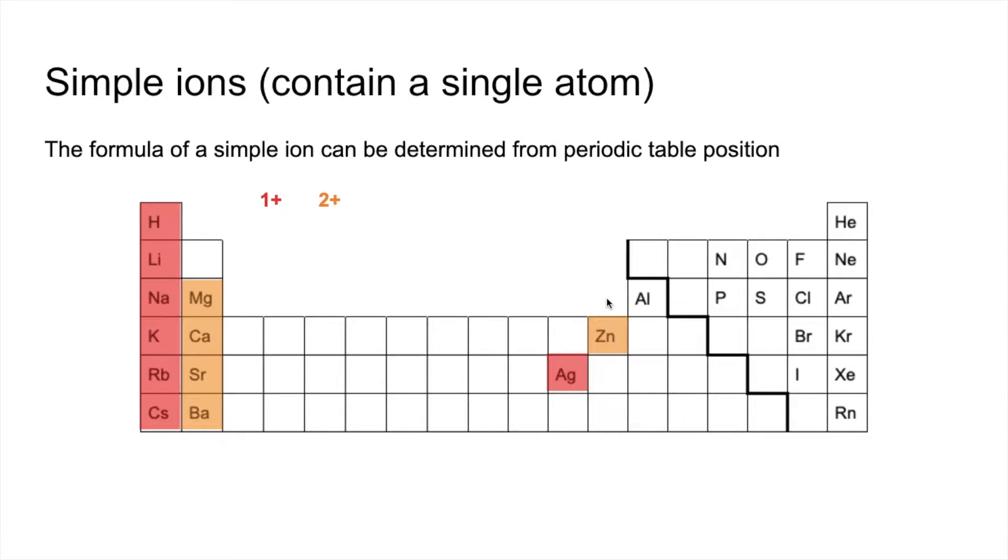And the only member of group three that we're going to worry about is aluminium. That forms a 3 plus ion. So it loses its 3 outer electrons, valence electrons, and becomes a 3 plus ion.